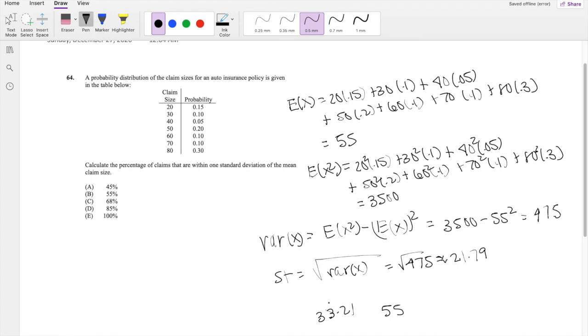Or the upper standard deviation, one standard deviation above it will be 76.79. So we just have to find the claim sizes that are between 33.21. So 30 is too small. So 40 is included. 70 is included. Is 80 included? Nope, 80 is too big.